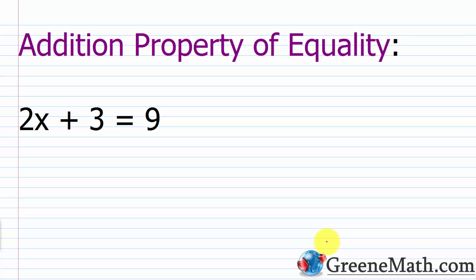You're not always going to be presented with the answer and just asked to plug it in and see if it works. So we use two properties when we first start solving equations. The first one is the addition property of equality. It tells us we can add the same value to both sides of an equation and we will not affect the solution. So with 2X plus 3 equals 9, we know the solution is X equals 3.